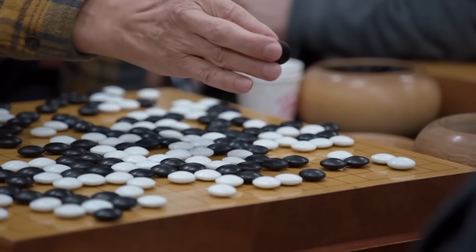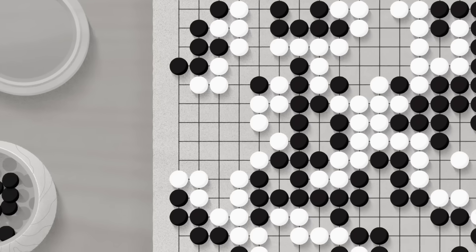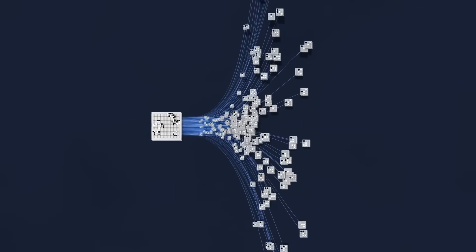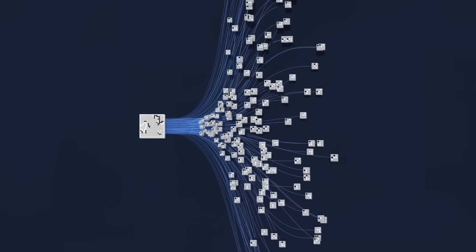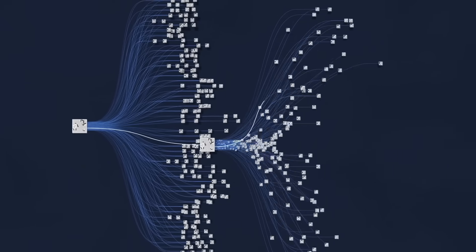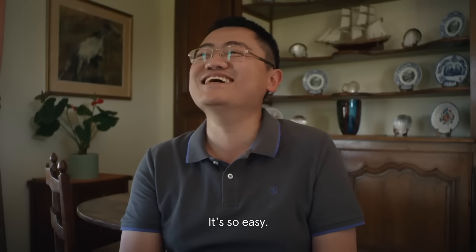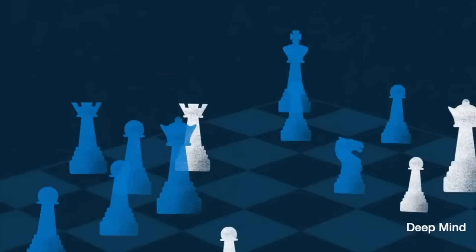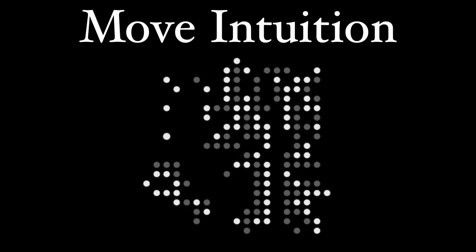More complex games reveal the limits of this approach. In Go, evaluating a position's true strength requires seeing several moves ahead. With 250 possible moves per turn versus chess's roughly 35 moves, exploring even a few steps into the future becomes astronomically complex. And this is why, by the early 2010s, no computer could beat the best human Go players. The breakthrough had to come from mimicking the other kind of human gameplay intuition: the ability to sense which moves are promising without evaluating every possibility, or move intuition.